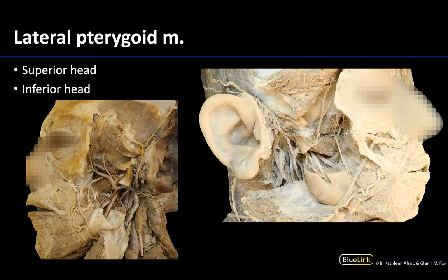Moving to the deeper muscles of mastication, starting with the lateral pterygoid muscle. This muscle has two heads, and two different images are shown here to illustrate different views of these two heads. The superior head's proximal attachment is at the greater wing of the sphenoid bone, and its distal attachment goes toward the articular disc and the capsule of the TMJ.